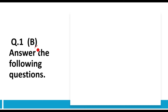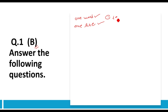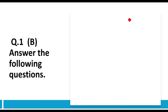Now we move to question 1B. When answering 1B, keep the following points in mind: your answer should be one word or one line. Use proper terminology — the words should be scientific or textual terms. Many times students write answers in their own words, but to get full marks you must write the correct scientific/textual term.